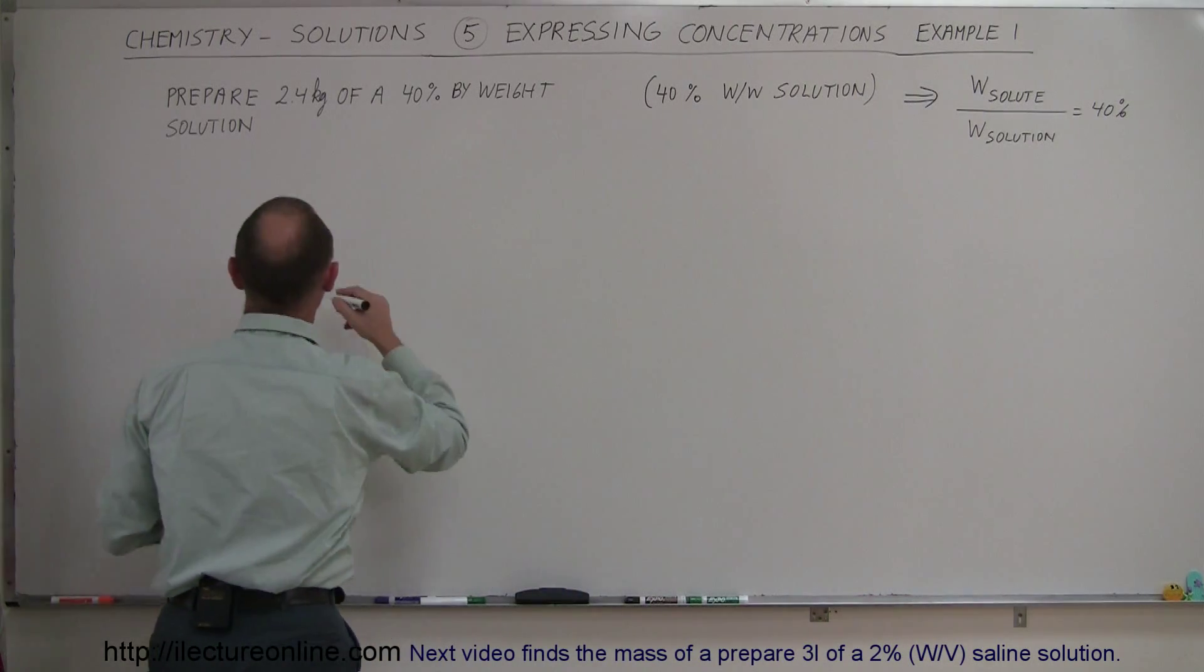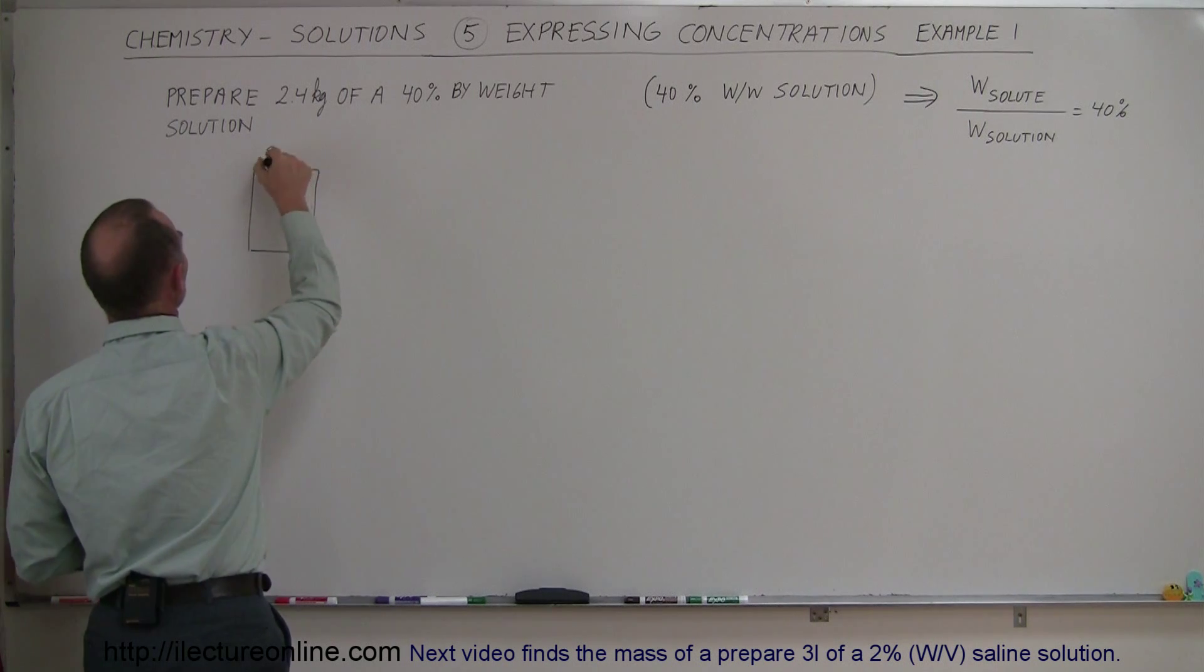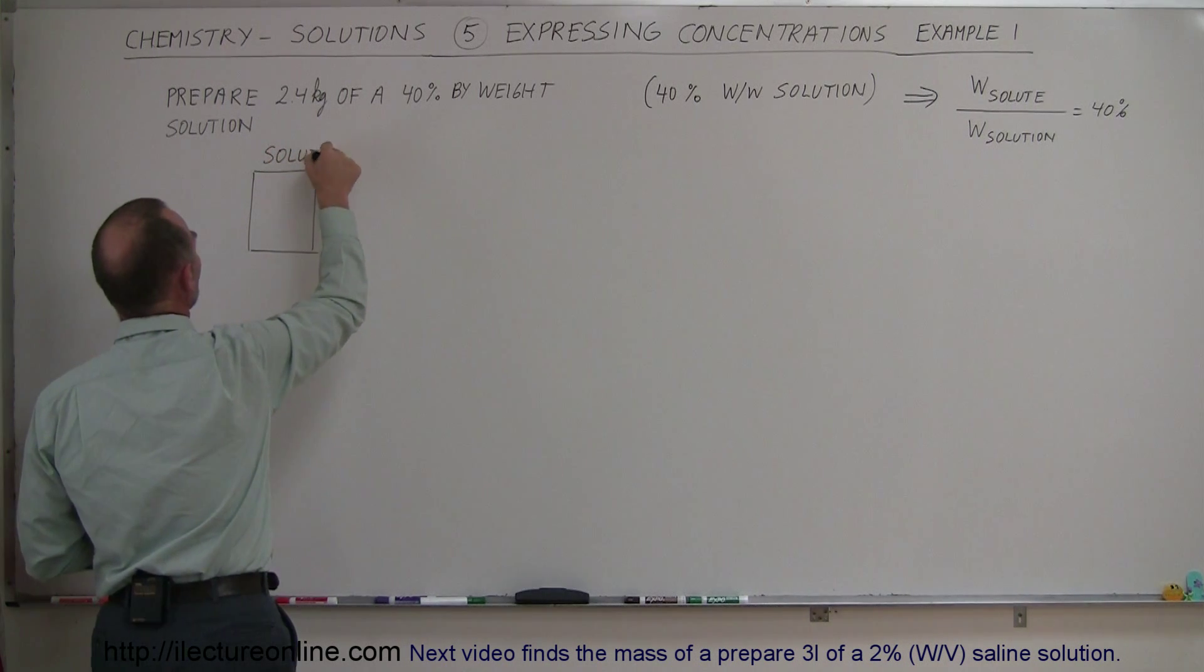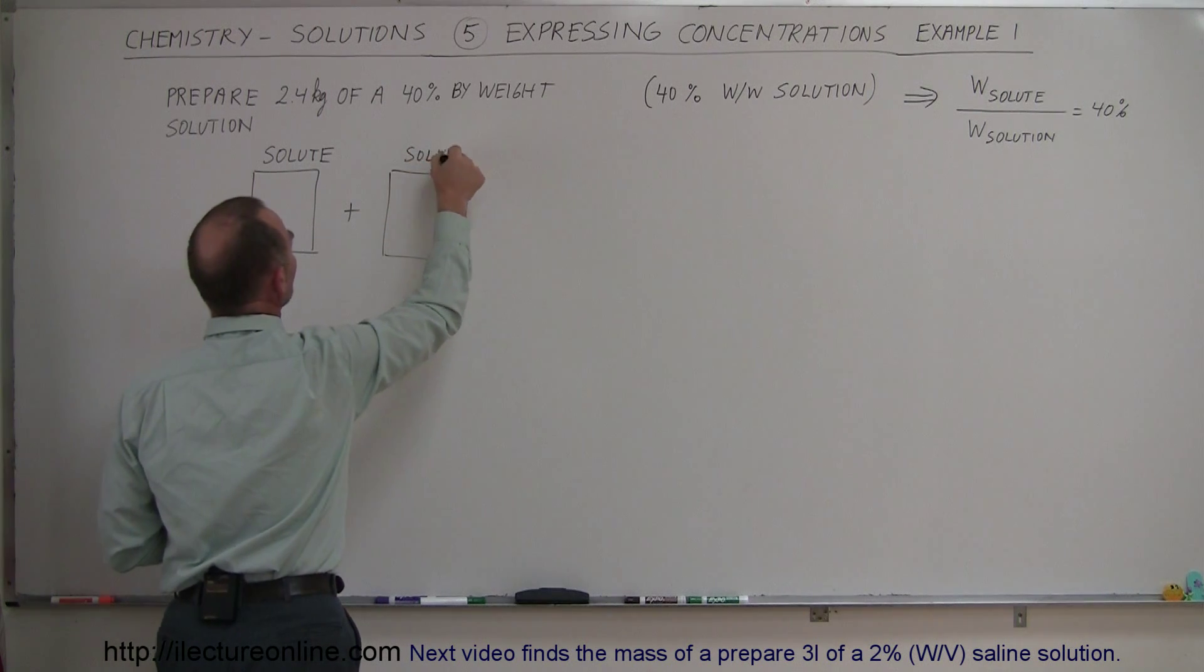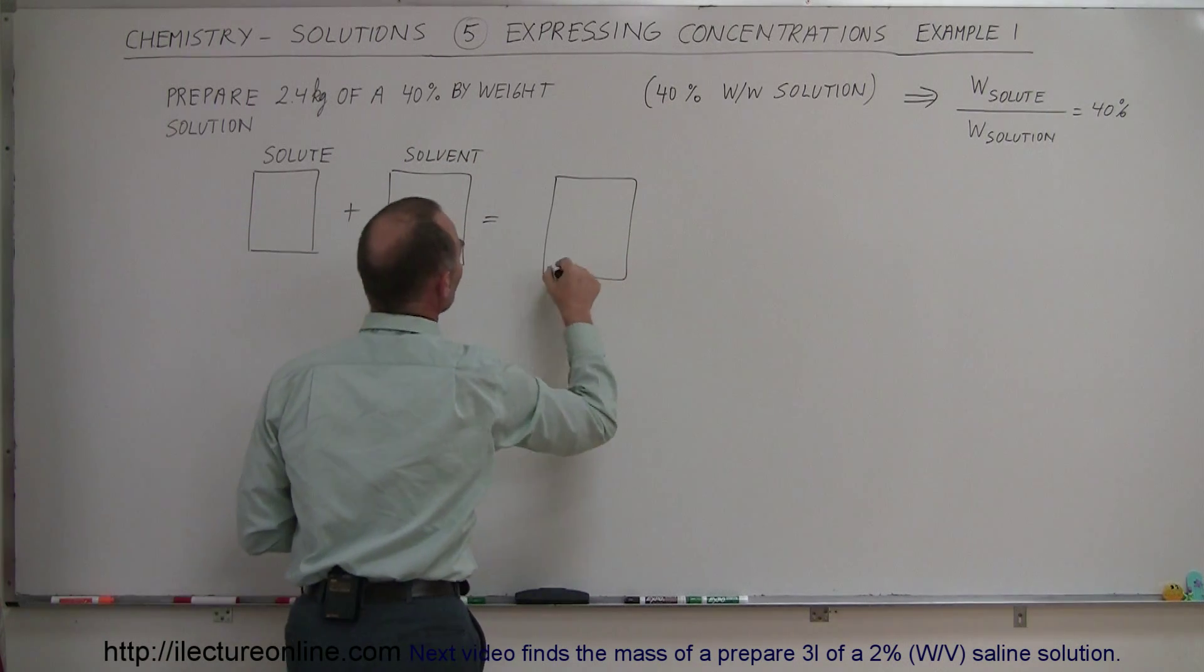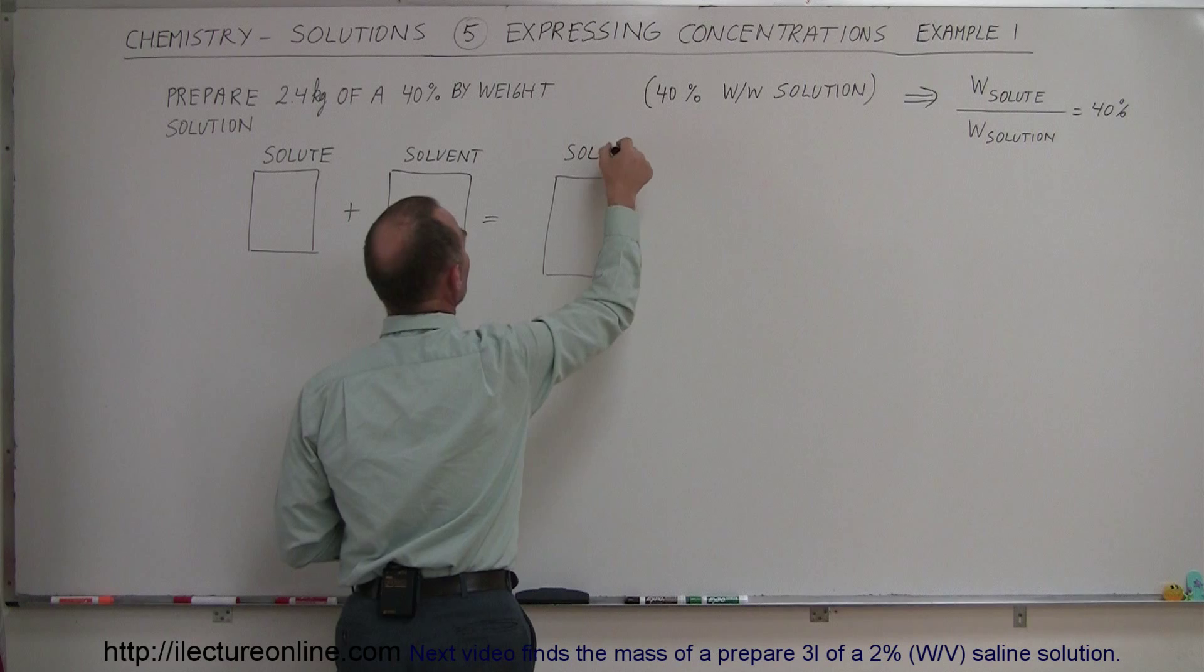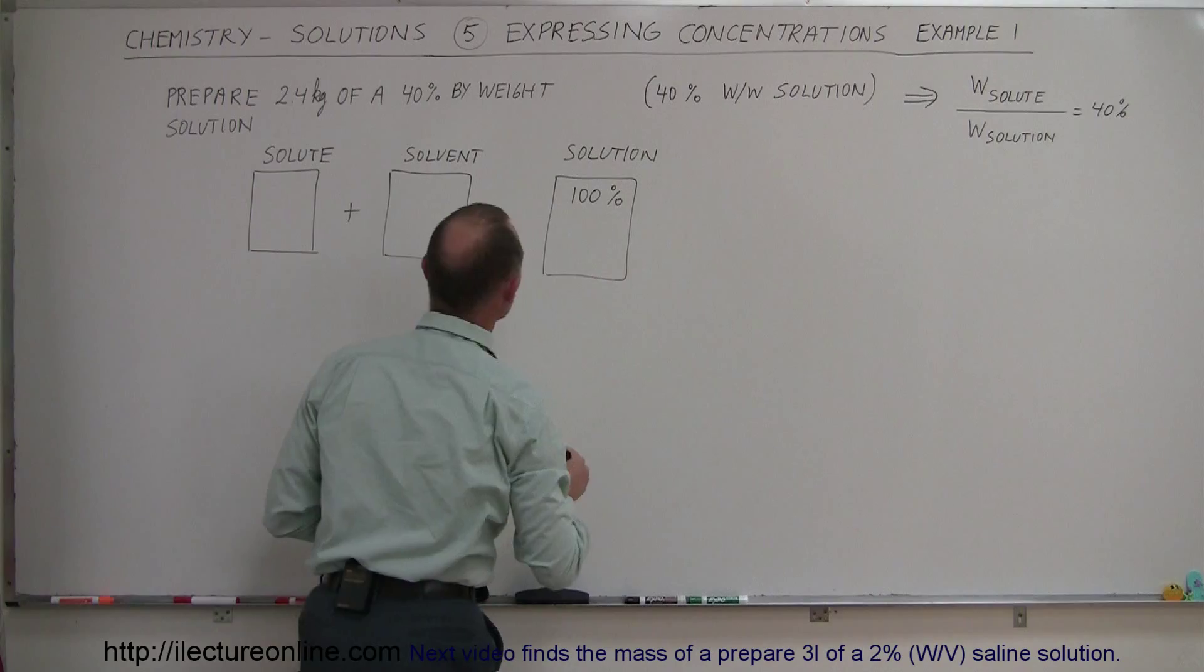The way to go about that is to draw three boxes. We can draw one box that represents the solute, plus another box that represents the solvent, and then an equal sign. Now we have a box that represents the total solution, and the total solution would be 100% of the solution.